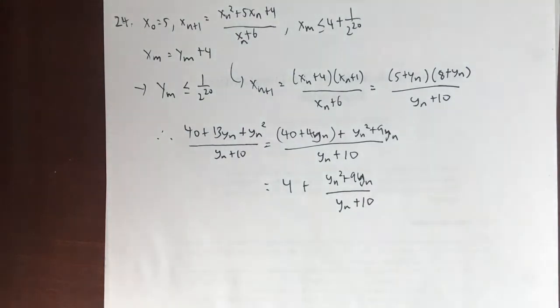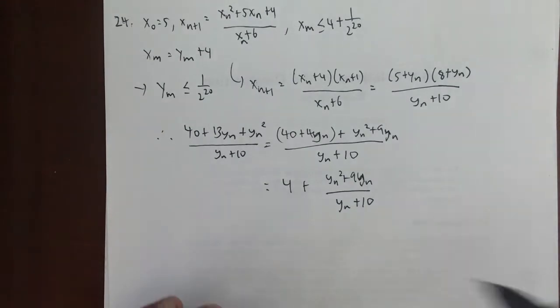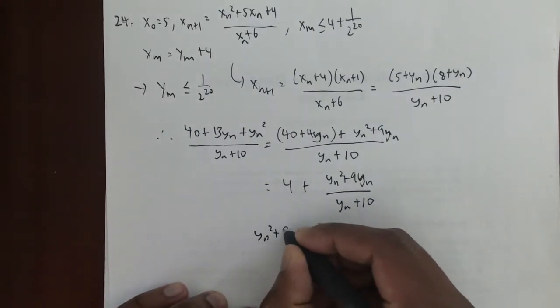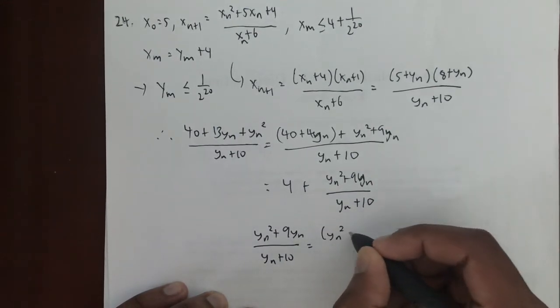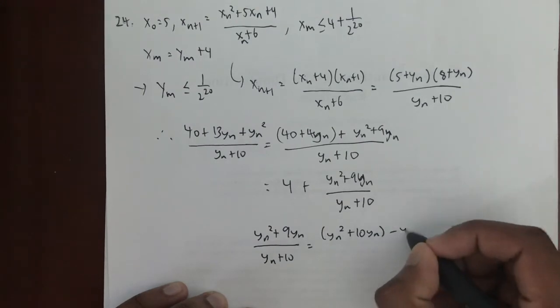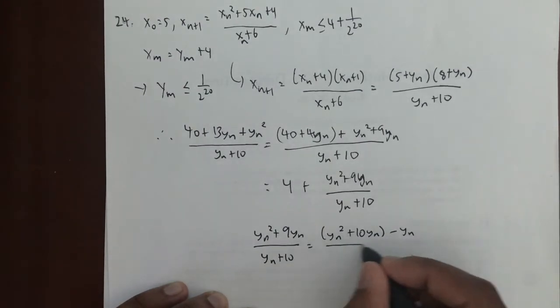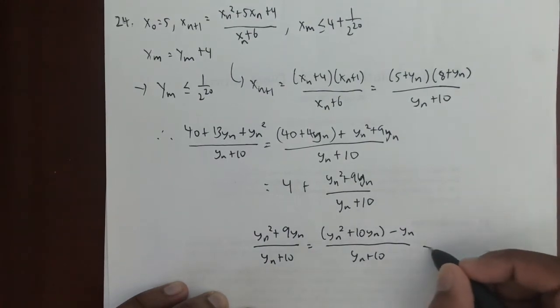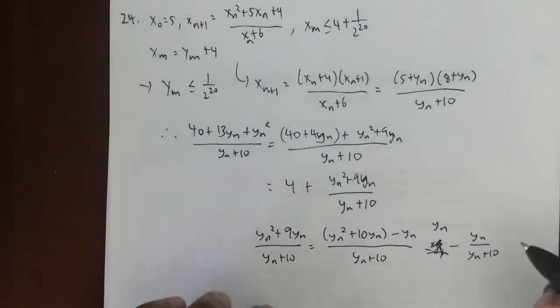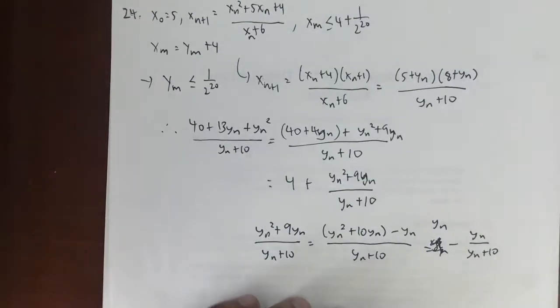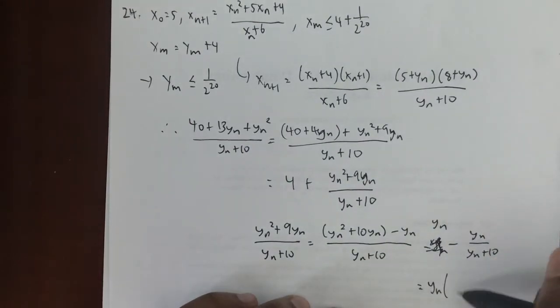Now here, I can reduce this even further. (y_n^2 + 9y_n)/(y_n + 10) can be rewritten as (y_n^2 + 10y_n - y_n)/(y_n + 10), which can now be rewritten as y_n(1 - 1/(y_n + 10)).